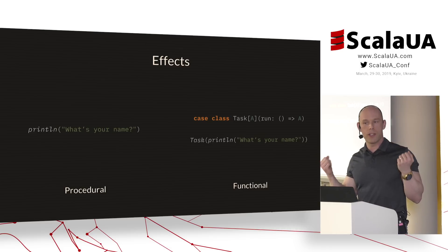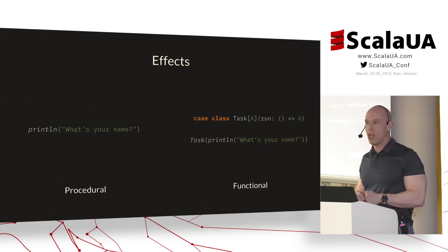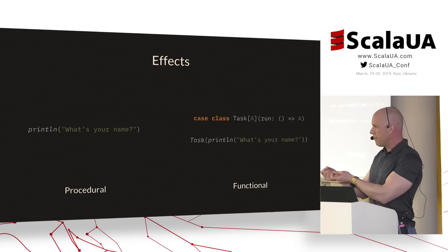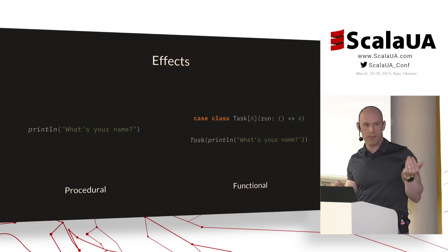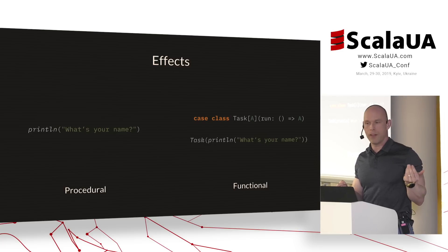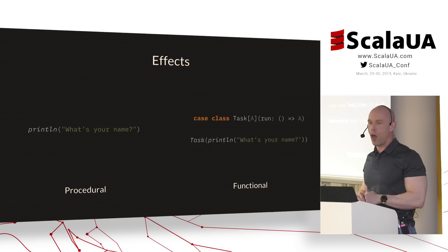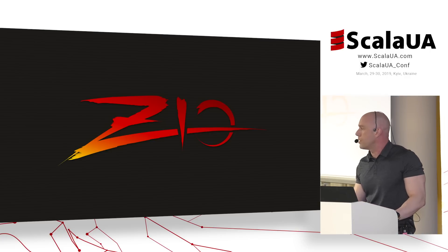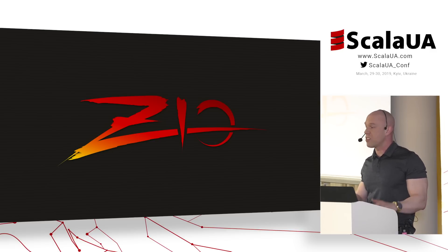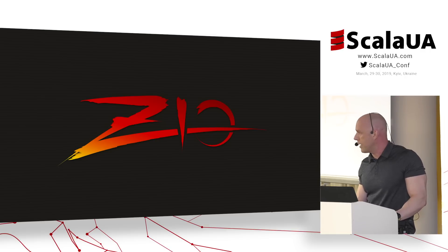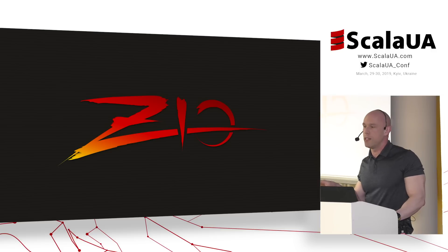Functional programs build models that describe complex interaction with the real world — that's all they do. At the end of the world in your application's main function, you have to run that model, translating the description of I/O operations into the corresponding procedural effects. But you don't have to do that until your main function, so you can operate in a purely functional way for the vast majority of your program. That's where libraries like ZIO come into play. ZIO is a very small, lightweight, zero-dependency library that helps you do functional programming at the scale of applications — concurrent, asynchronous, and parallel.